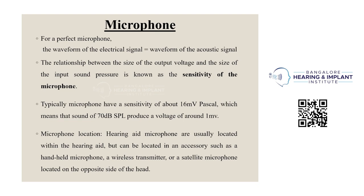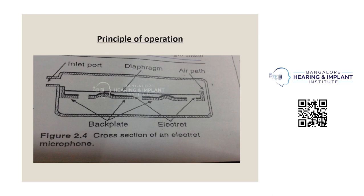This means that a sound of 70 dB SPL produces a voltage of around 1 mV. Hearing aid microphones are usually located within the hearing aid, but can be located in ancillary devices such as a handheld microphone, wireless transmitter, or satellite microphone located on the opposite side of the head.